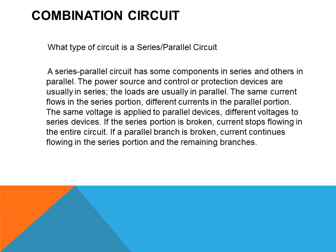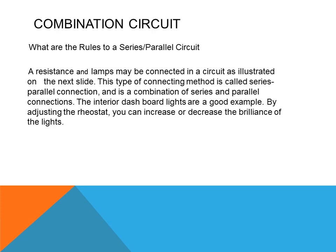The same voltages apply to the parallel devices; different voltages to the series devices. If the series portion is broken, current stops flowing to the entire circuit. If a parallel branch line is broken, current continues to flow in the series portion and the remaining branch lines. Looking at the rules of a series-parallel circuit: a resistance and lamp may be connected in a circuit as illustrated. This type of connecting method is called series-parallel connection, and is a combination of series and parallel connections. The interior dashboard lights are a good example.